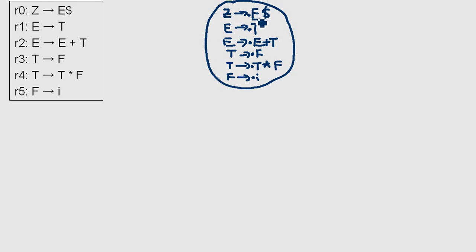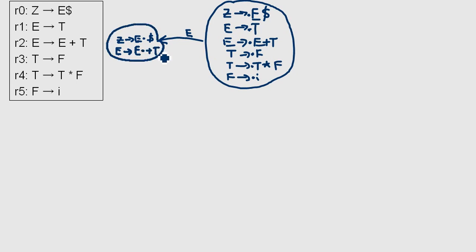Let's start with the rule in here. We can have the input E, for example. Our pointer shifts one symbol to the right. We have to take a little more care here because E appears not only in one rule but also in another, so we have to take that into account as well. If the pointer is in front of the dollar sign, this is usually our final accepting state.